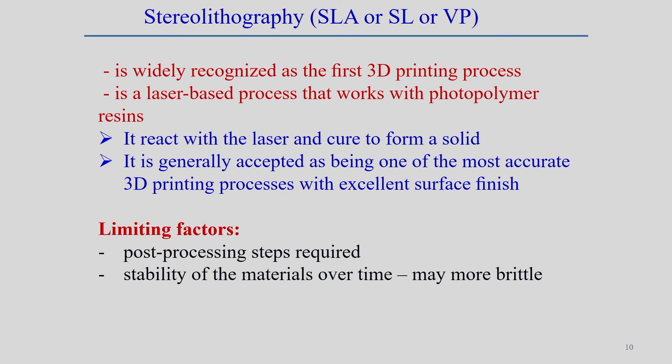Stereolithography (SLA or VAT polymerization) is one of the earliest recognized 3D printing processes. It is a laser-based process that works with photopolymer resin — a liquid resin sensitive to laser light. When the laser is focused on the liquid resin, that part solidifies and forms the structure while the rest remains liquid. This curing process makes SLA one of the most accurate 3D printing processes, capable of achieving excellent surface finish.